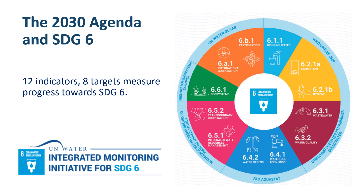In total, 12 indicators contribute to reporting on the progress towards SDG 6, with various UN organisations acting as custodian agencies for each indicator.